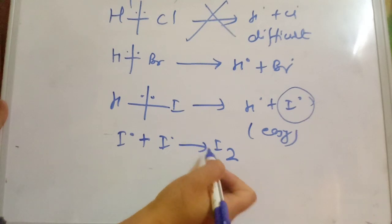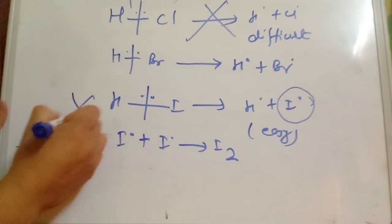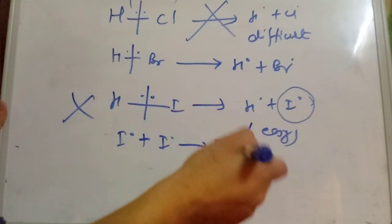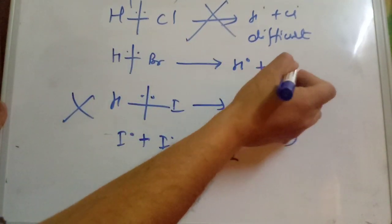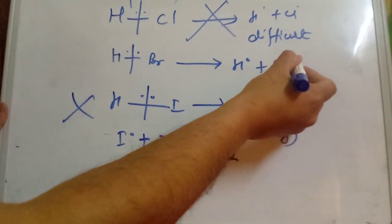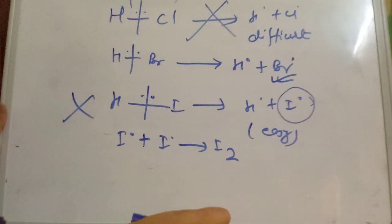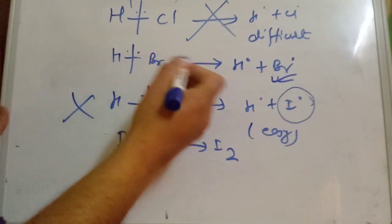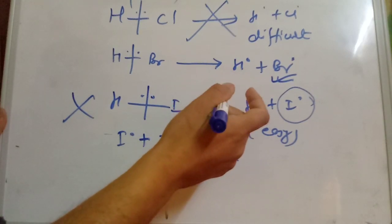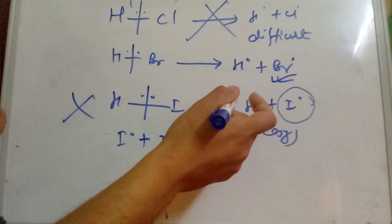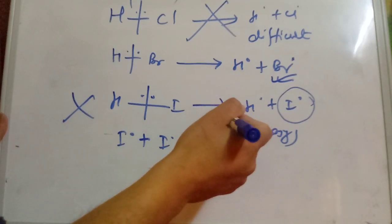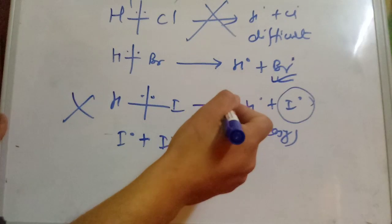So the peroxide effect can be seen in the case of HBr. In HBr, the bromine radical formed is available and suitable for the reaction. The bromine radical participates effectively in the propagation steps, which is why the peroxide effect is observed specifically in HBr.